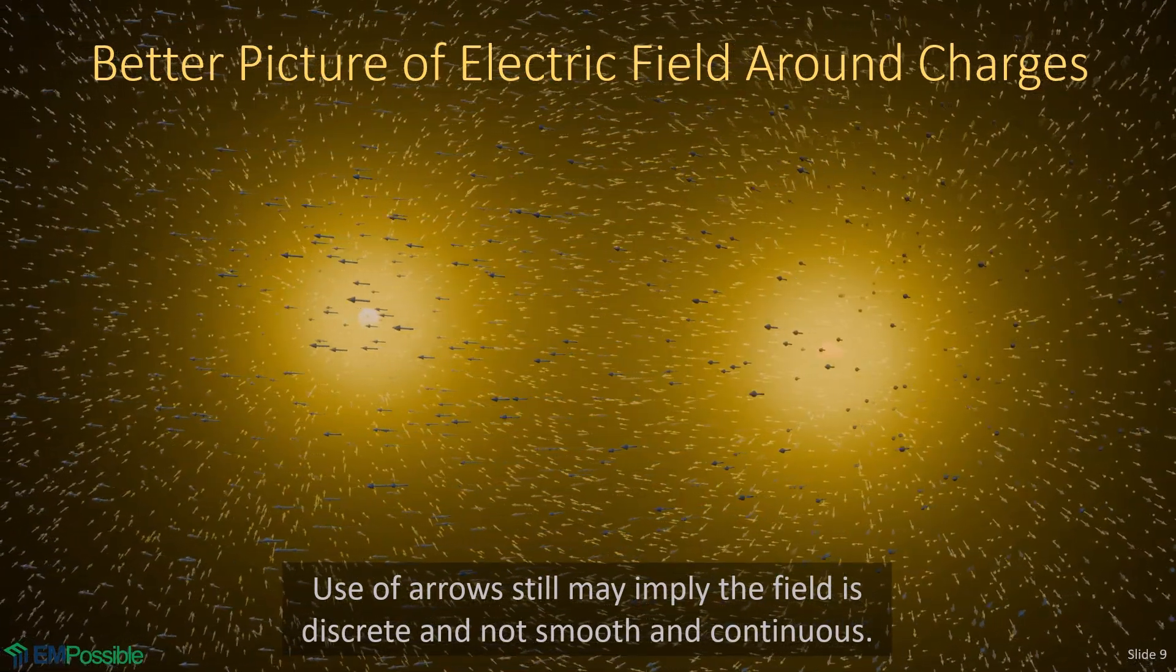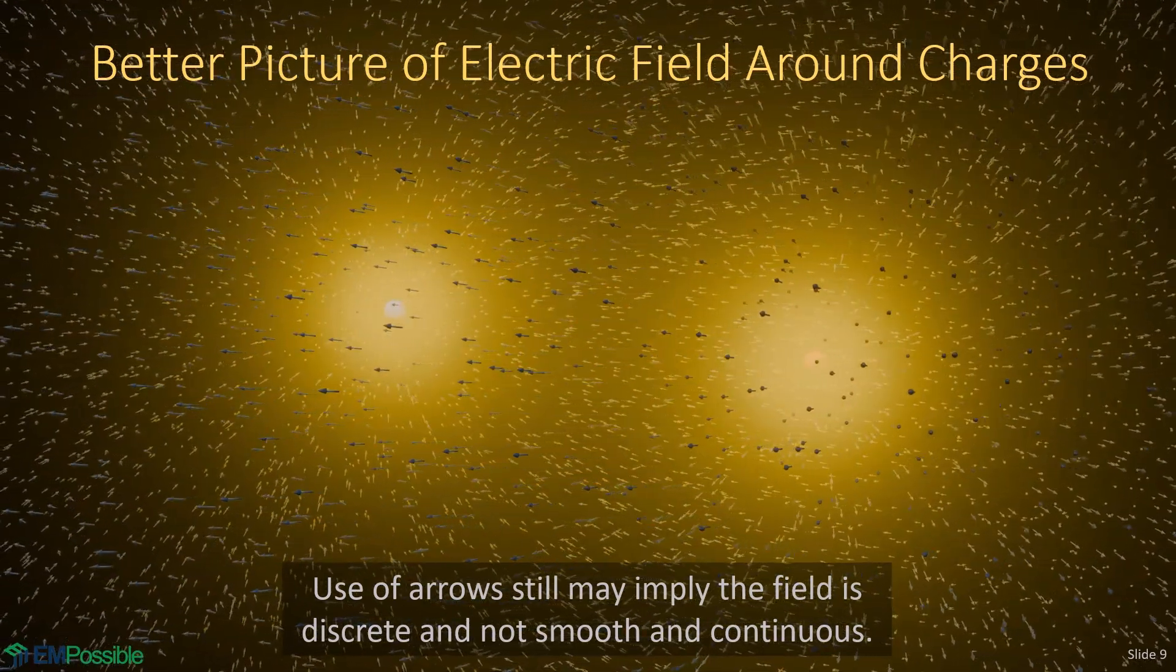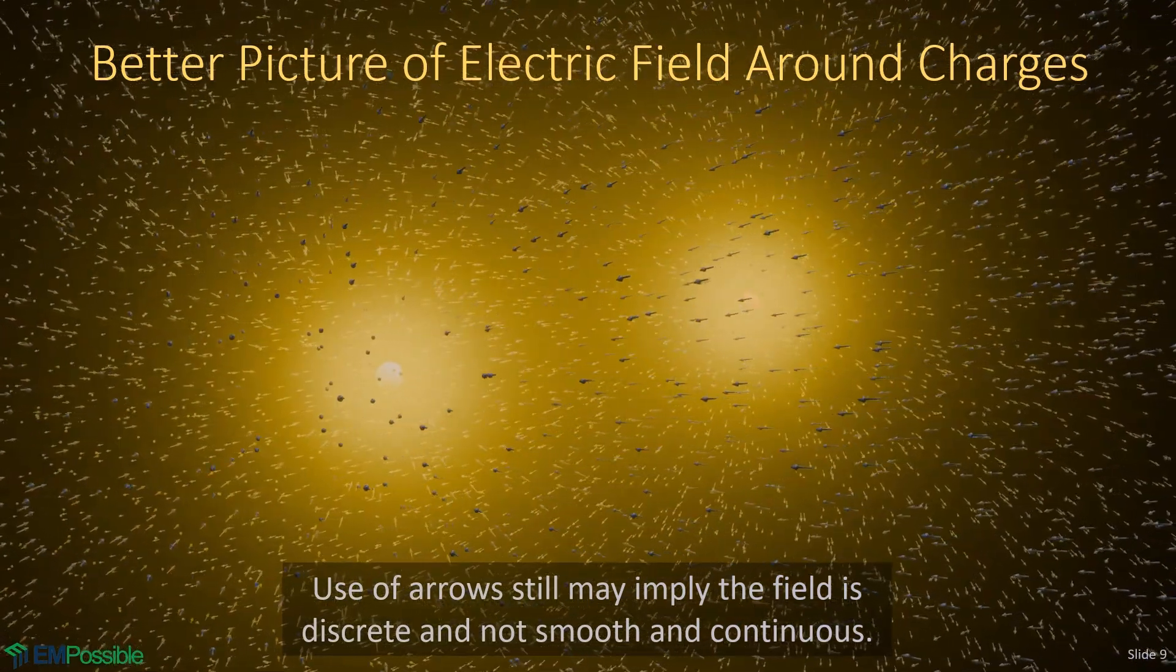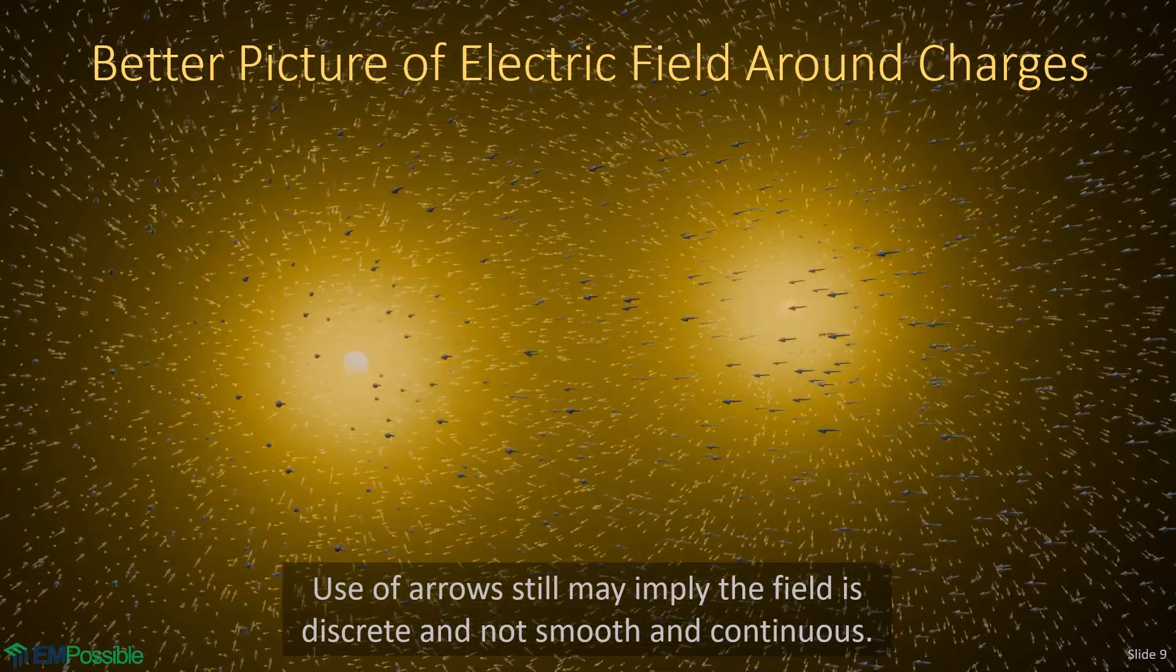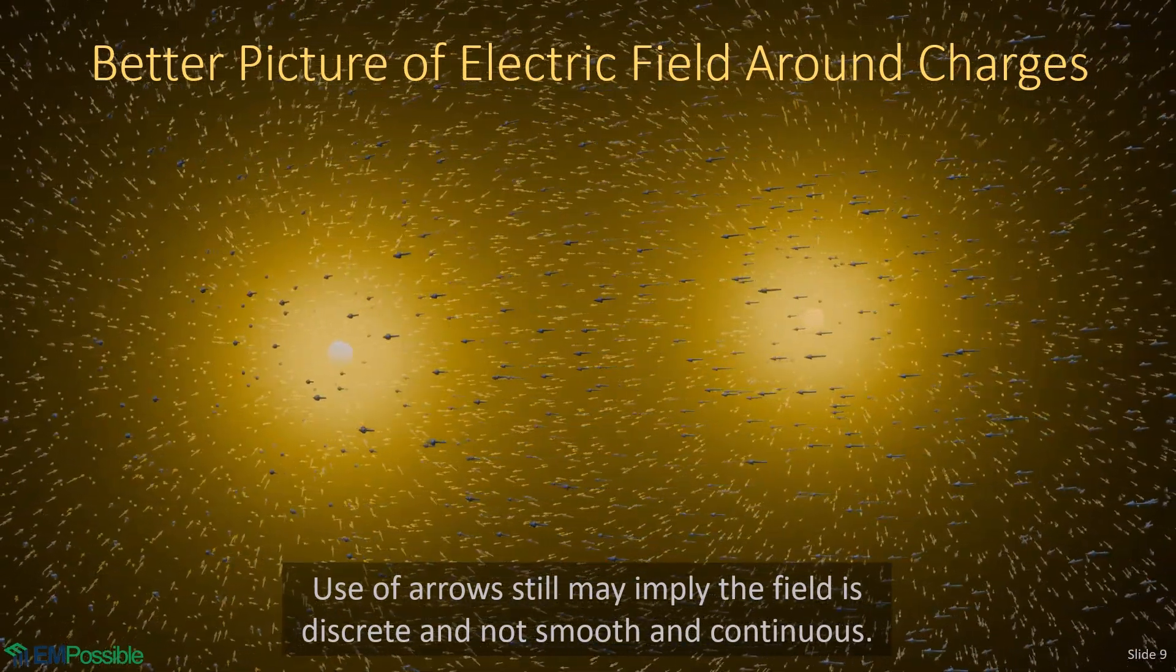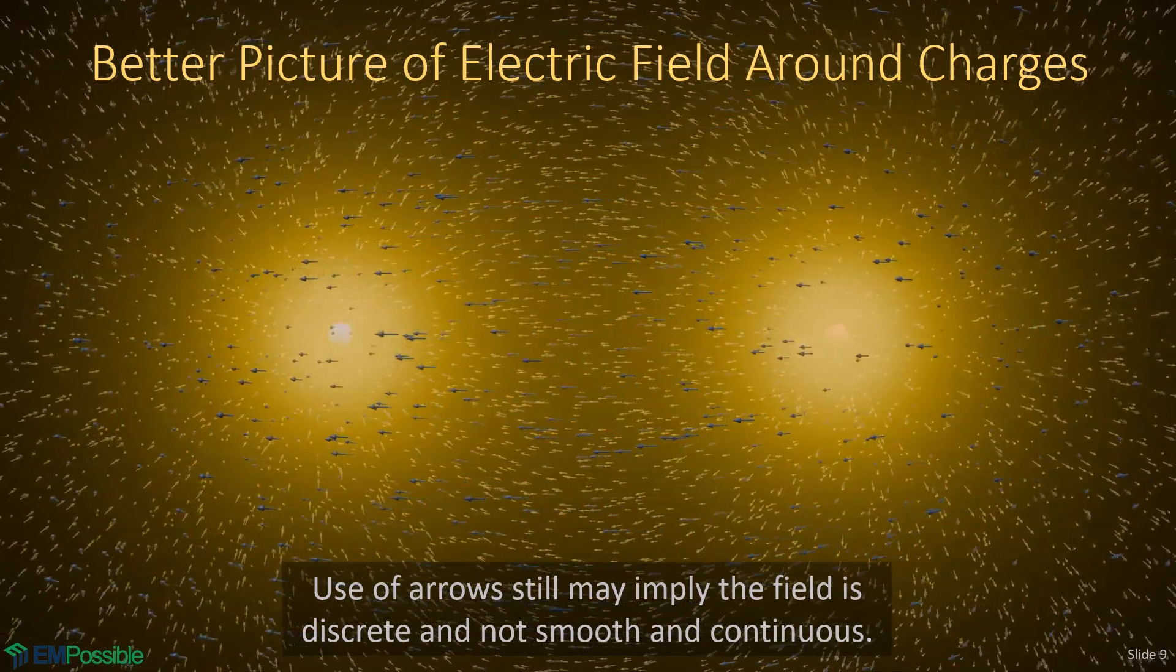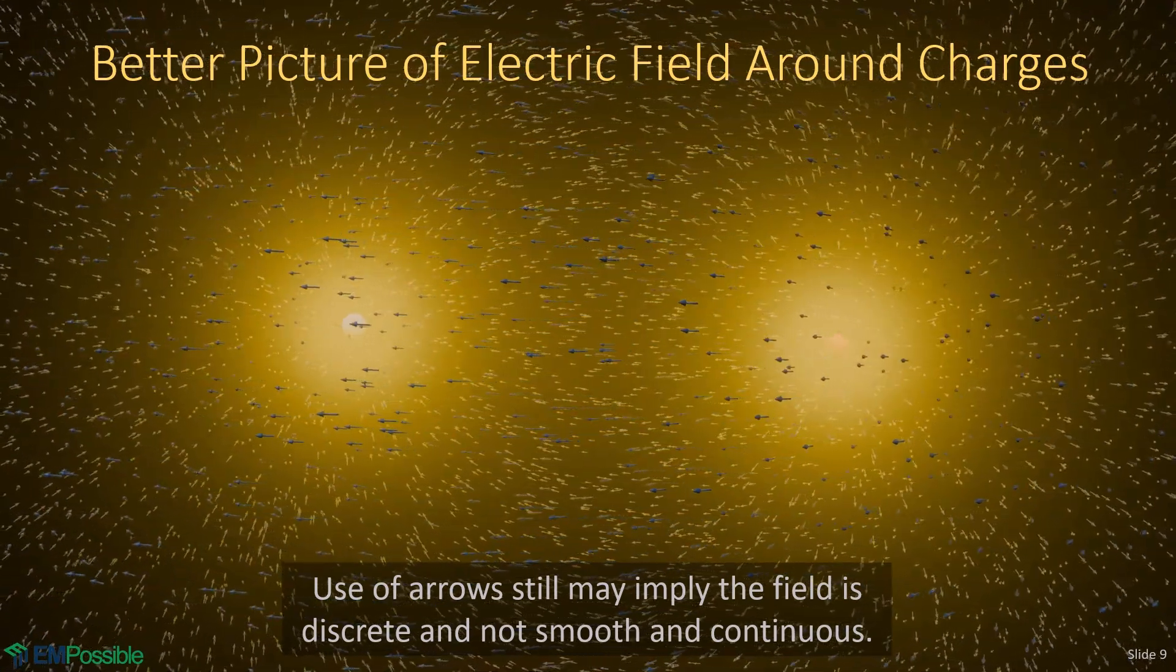But this visualization has the same imperfections as the last one in that drawing discrete arrows like this is still incorrectly implying that there's something discrete or blotchy about the electric field. And as I mentioned before, I really wish I could come up with a way to convey direction in a smooth, continuous, distributed manner. But so far, I haven't come up with anything like that. And the last thing, this is still too busy to really be useful for conveying on paper or other simple properties of the field. But it is a very good way to try to visualize what the electric field actually looks like around these two charges.